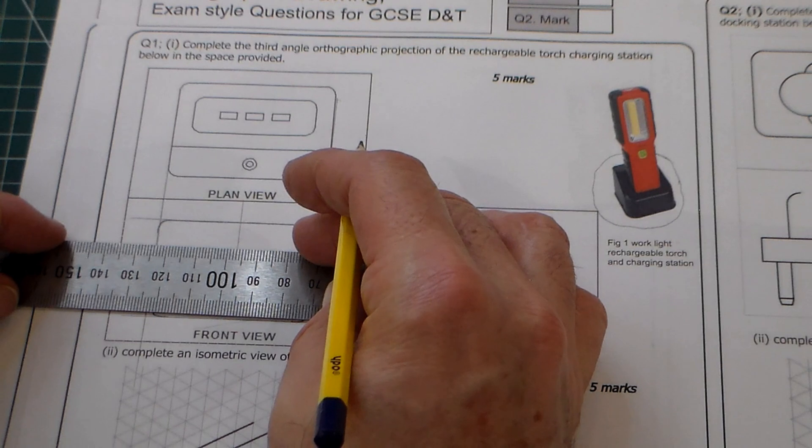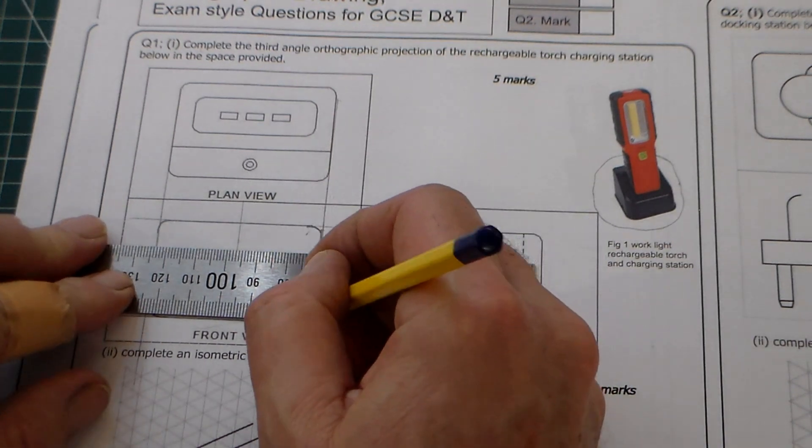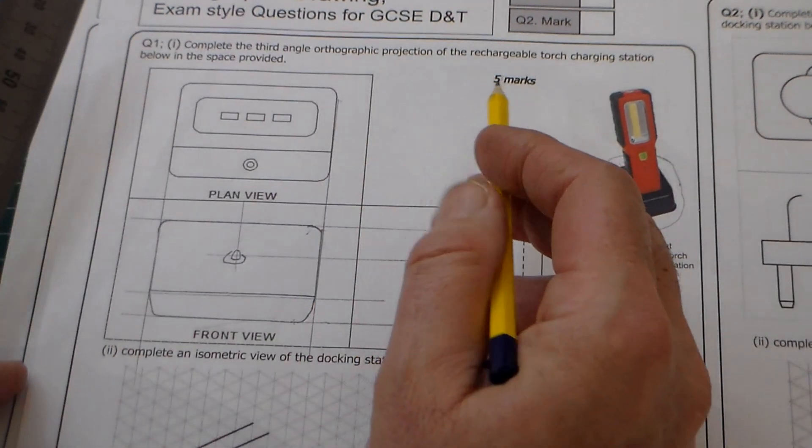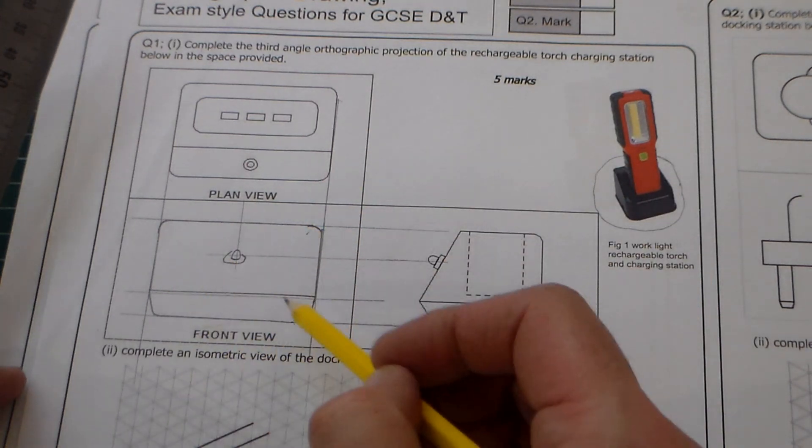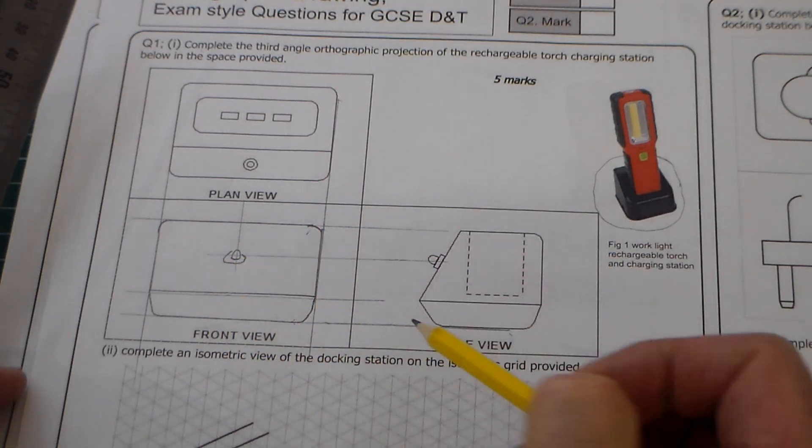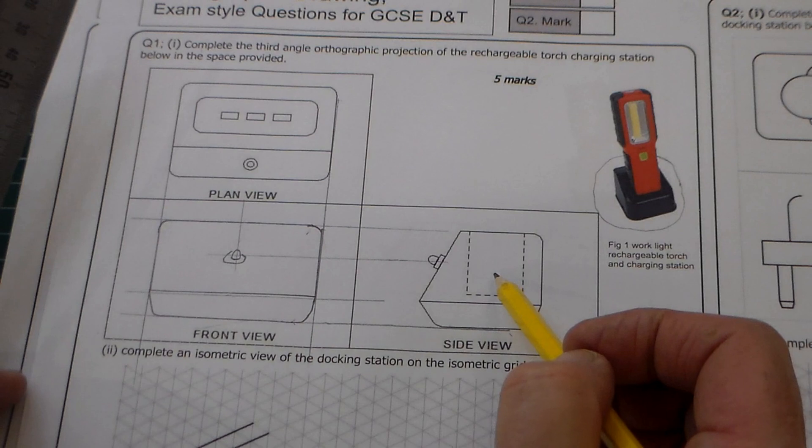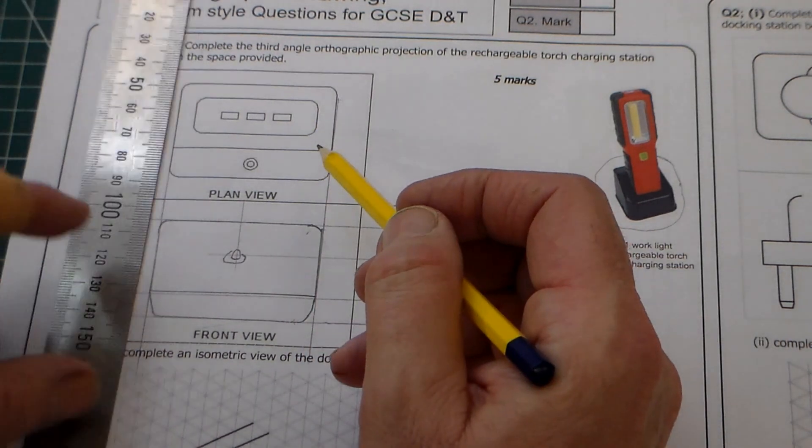The bottom here. So that should be, if it's five marks, we've probably got a couple of marks for the lines, the LED, getting the radii correct. Last of all, we've got this hidden detail. So there's obviously a slot that that fits into.